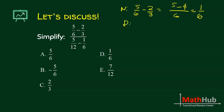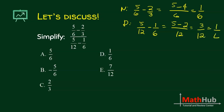What about the denominator? What is the LCD? It's 12. This simplifies to 3 over 12, or 1/4. So my numerator is 1/6 and my denominator is 1/4.